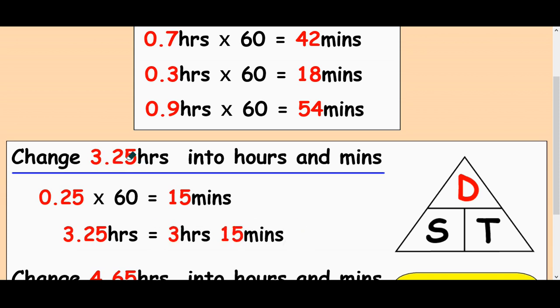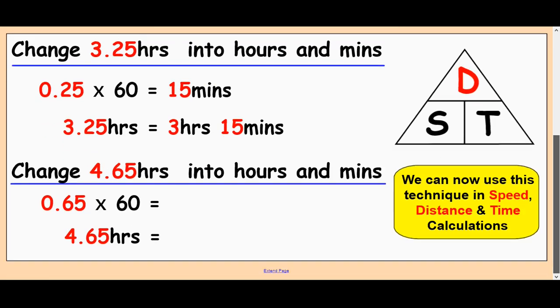If that came out at the end of an answer in a time question, make sure you change it into hours and minutes. And the last one here, 4.65 hours. Well, deal with the 0.65 times it by 60, you get 39 minutes. So that's 4 hours and 39 minutes.